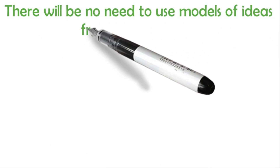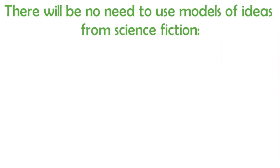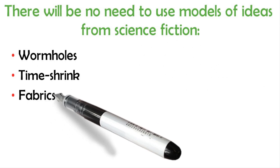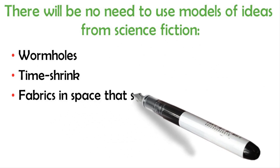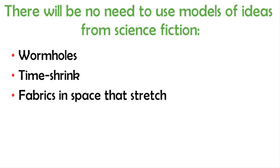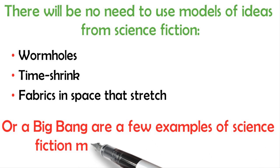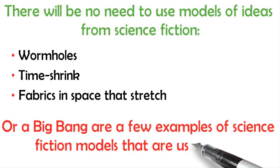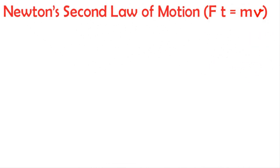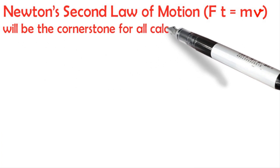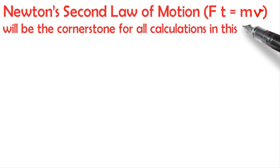There will be no need to use models of ideas from science fiction. Wormholes, time shrink, fabrics in space that stretch, or a big bang are a few examples of science fiction models that are used today. Newton's second law of motion will be the cornerstone for all calculations in this theory.